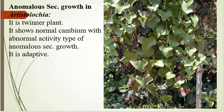First of all, in the previous video, I talked about anomalous secondary growth. So what is anomalous secondary growth? It is any change in the secondary tissue — that is, vascular cambium or cork cambium — where addition of secondary tissue results in some changes. Due to these changes, anomalous secondary growth is observed in various plants. Today we will talk about the plant Aristolochia.